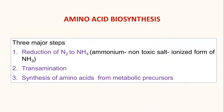Amino acid biosynthesis takes place through different steps. First and foremost is to acquire nitrogen. This nitrogen comes from atmospheric nitrogen and is reduced to ammonium by many different ways. Then there are certain reactions called transamination reactions, and metabolic precursors from various metabolic pathways — the citric acid cycle, the pentose phosphate pathway — all go into the synthesis of amino acids.